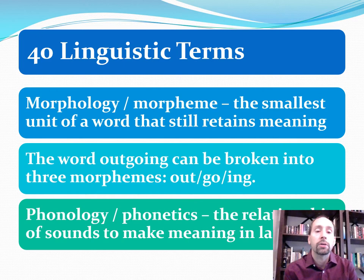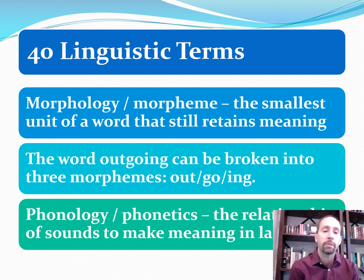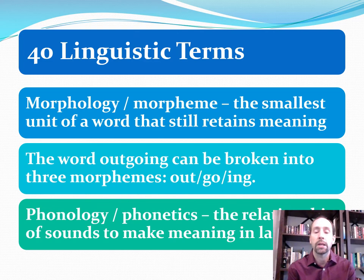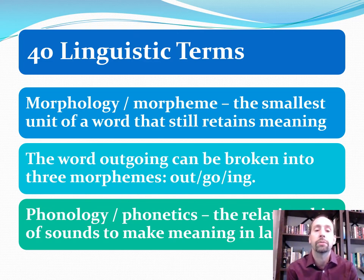Alright, let's get started with morphology, or a morpheme — what does that mean? It's the smallest unit of a word that still retains meaning. For example, take the word 'outgoing' — I can break it into three morphemes: out, go, and -ing. Each of those three parts has a significance on its own.